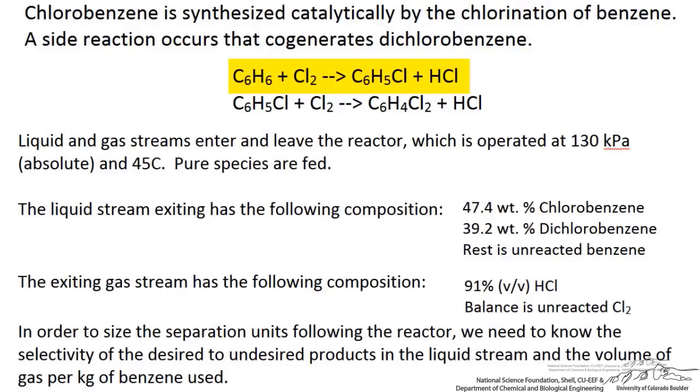It is synthesized catalytically by the chlorination of benzene, as you can see here in this first reaction. A side reaction occurs that co-generates dichlorobenzene. This is our undesired product.